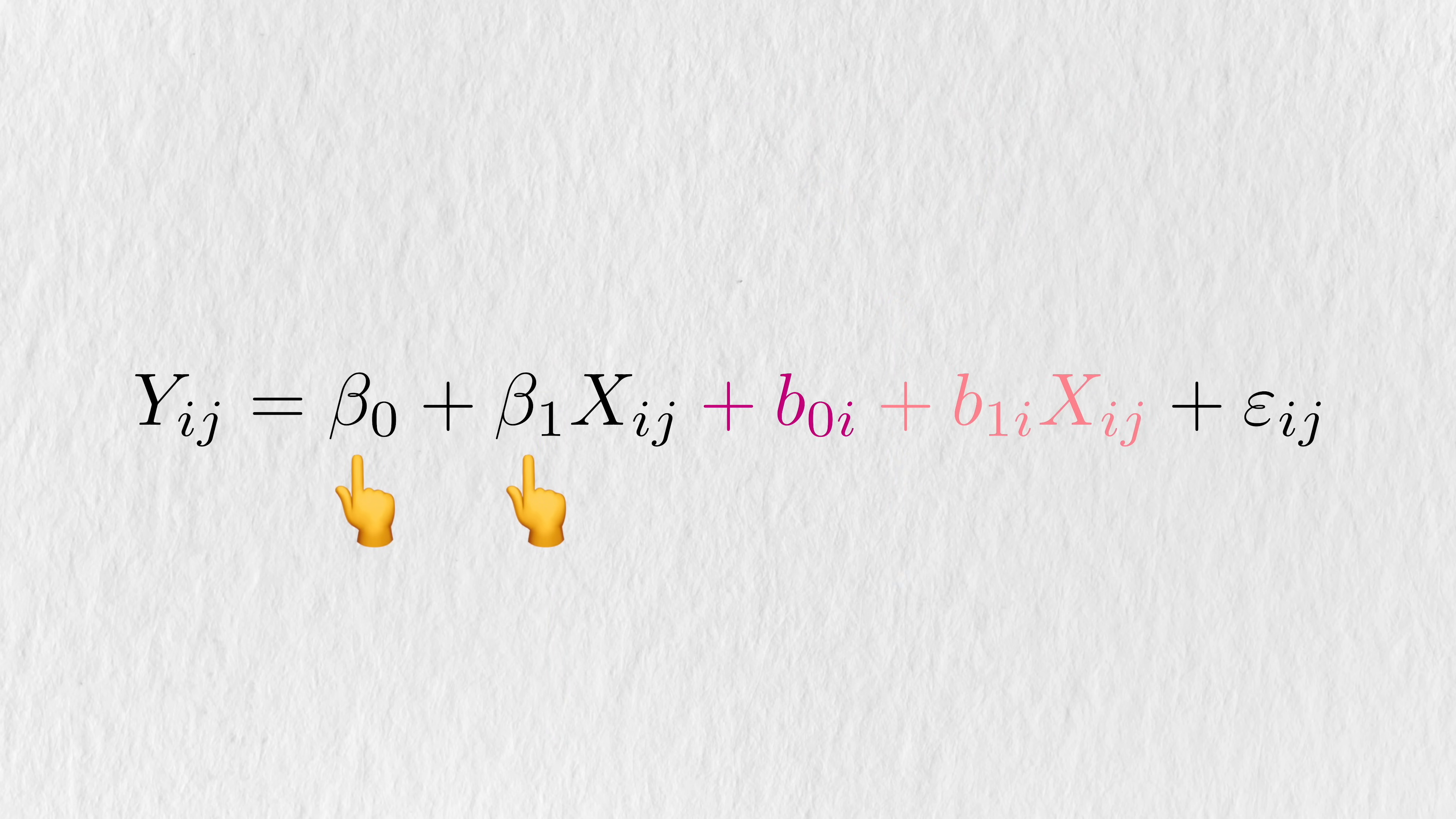In this model, beta0 and beta1 are what we call fixed effects. Unlike the random slope and intercept, these parameters are not pegged to any specific person. You can think of beta1 as a change that everyone in the group experiences due to treatment, and a random slope as the additional change that a specific person experiences. Together, fixed and random effects are mixed effects, hence the name of the model.